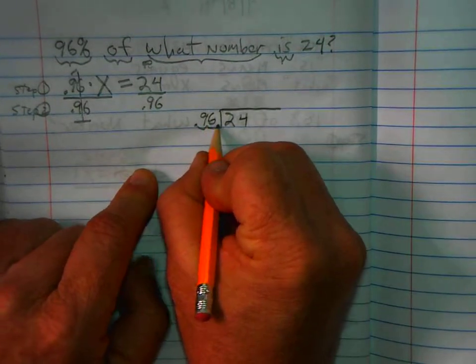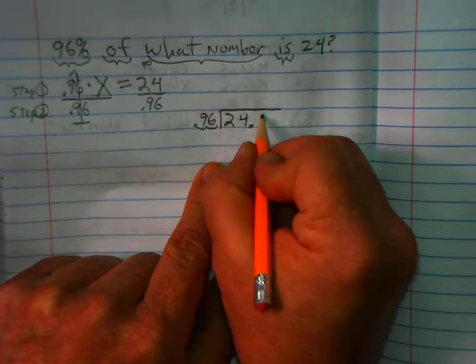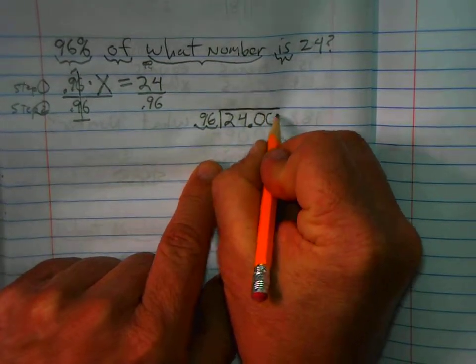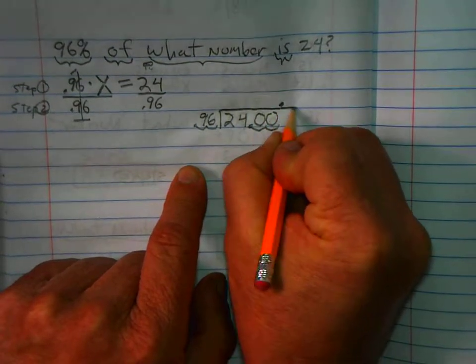Now, I've got to move this decimal over two places. One, two. And there's a decimal that's implied but not written. And it has to also move over two places. One, two. So it ends up there.